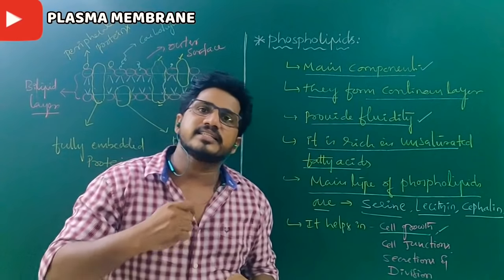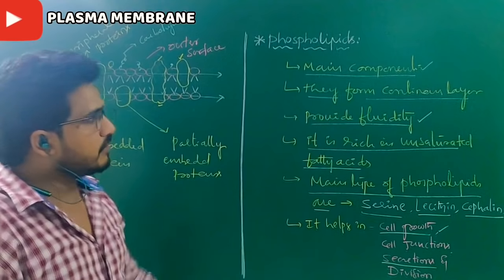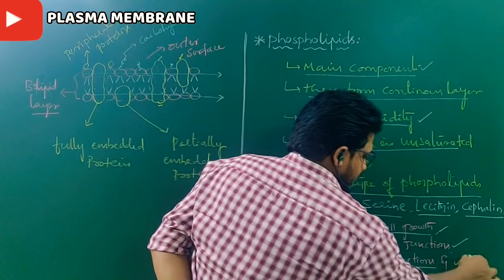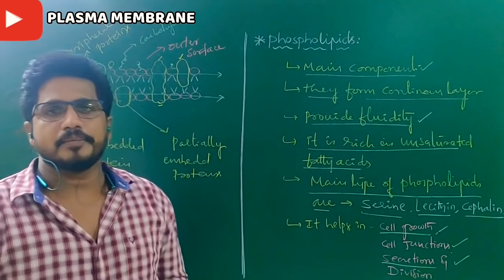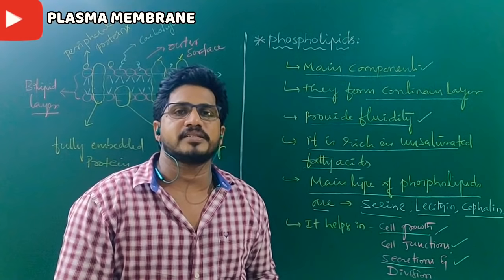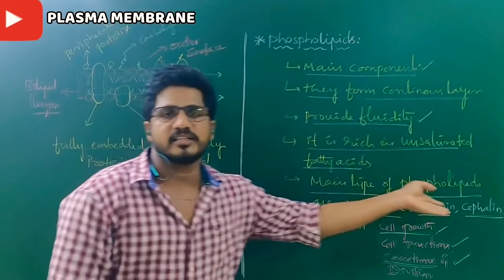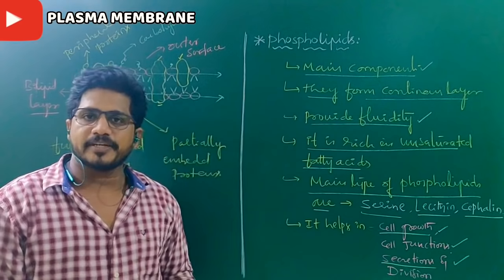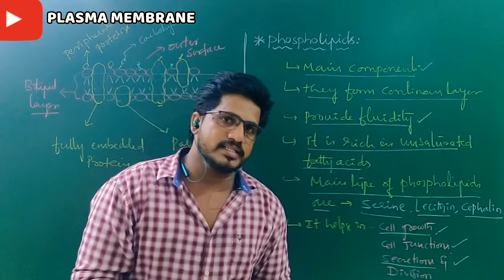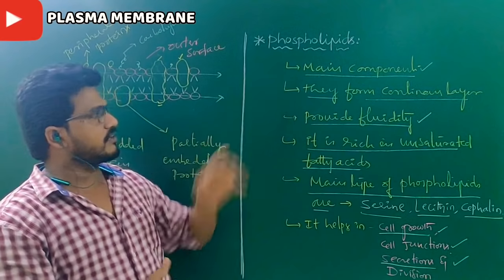Phospholipids form a continuous layer and are fluid in nature because of the presence of unsaturated fatty acids. They are the major component. The main types available in nature are serine, lecithin, and cephalin. Functions of phospholipids include cell growth, cell repair, cell division, cell secretion, and forming cell junctions. Cell junctions — gap junctions, adherence junctions, and desmosomes — all occur because of the presence of phospholipids. Proteins have no role in cell junctions.